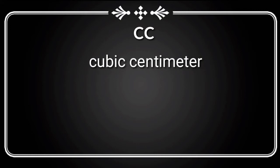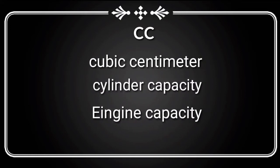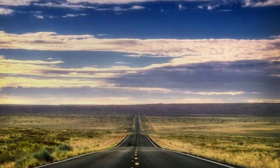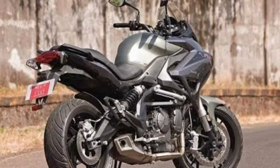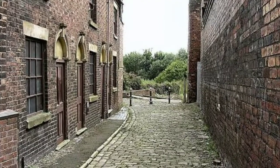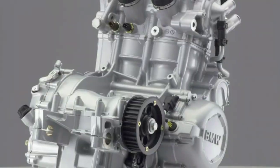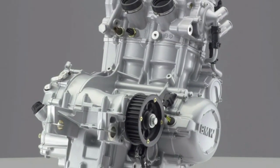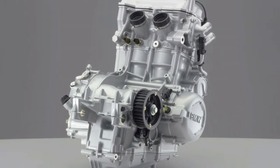There is a cylinder capacity, and there is an engine capacity. If we use one liter of petrol, then we can use one liter of petrol. Now, this mileage is because of CC. Let's see how the CC works.